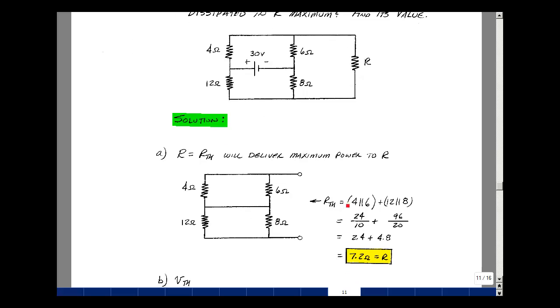Take the load off, look back in those terminals, and it's right here, and set all the independent sources equal to zero. So that's a short circuit for a battery, open circuit for a current source. And now what I've got is 4 ohms in parallel with 6, 12 ohms in parallel with 8, and then those two are in series.